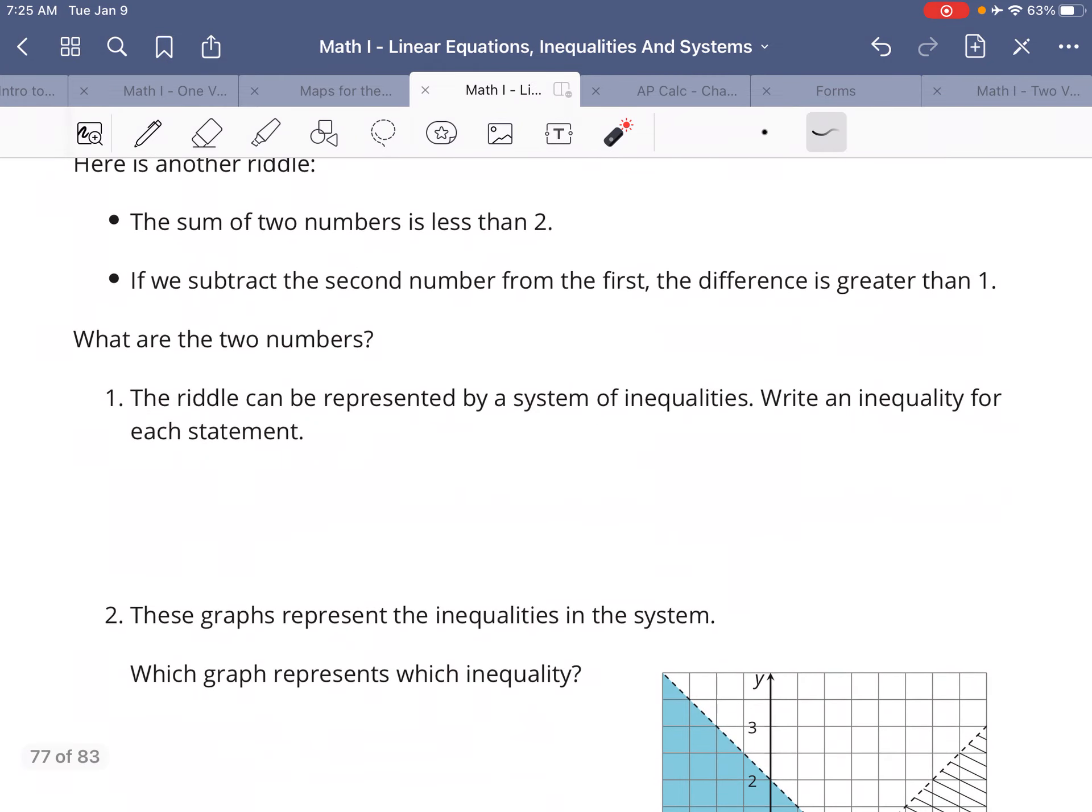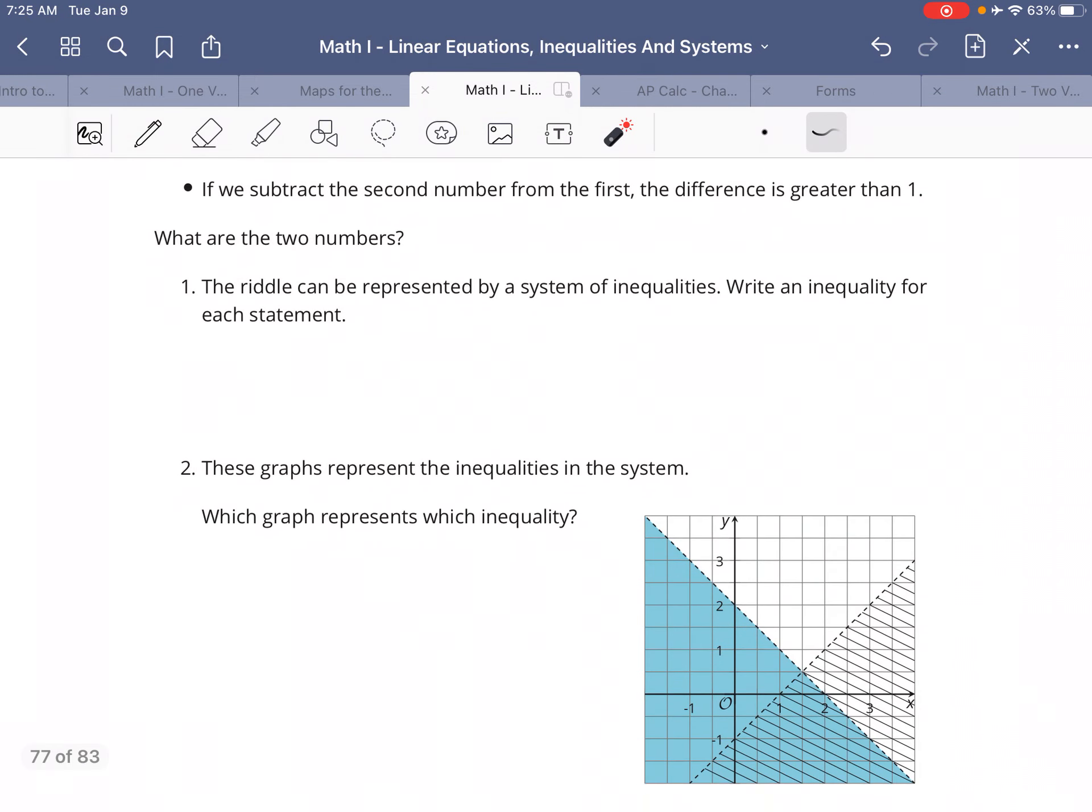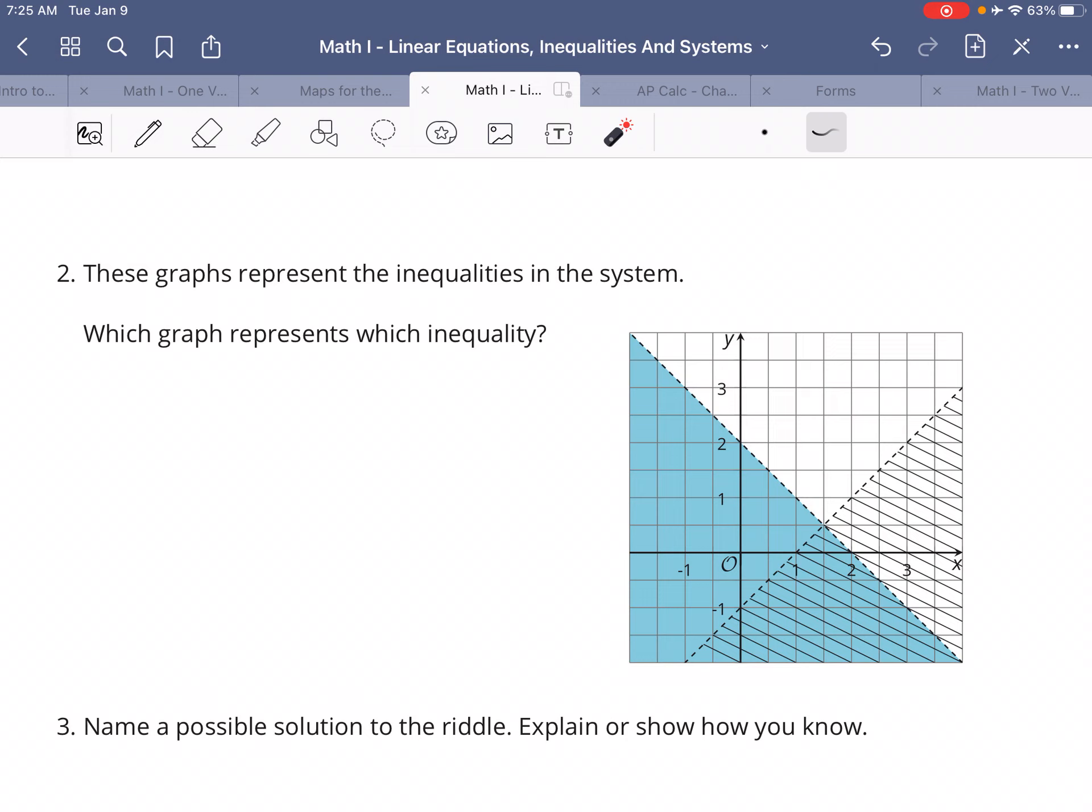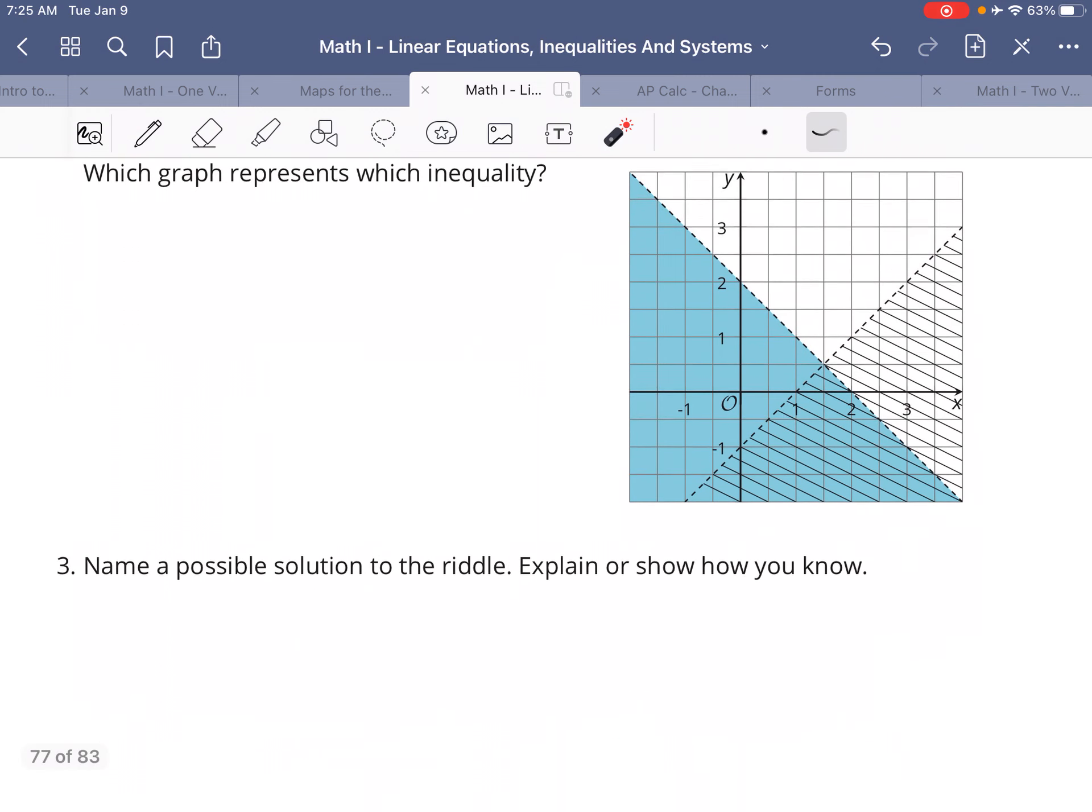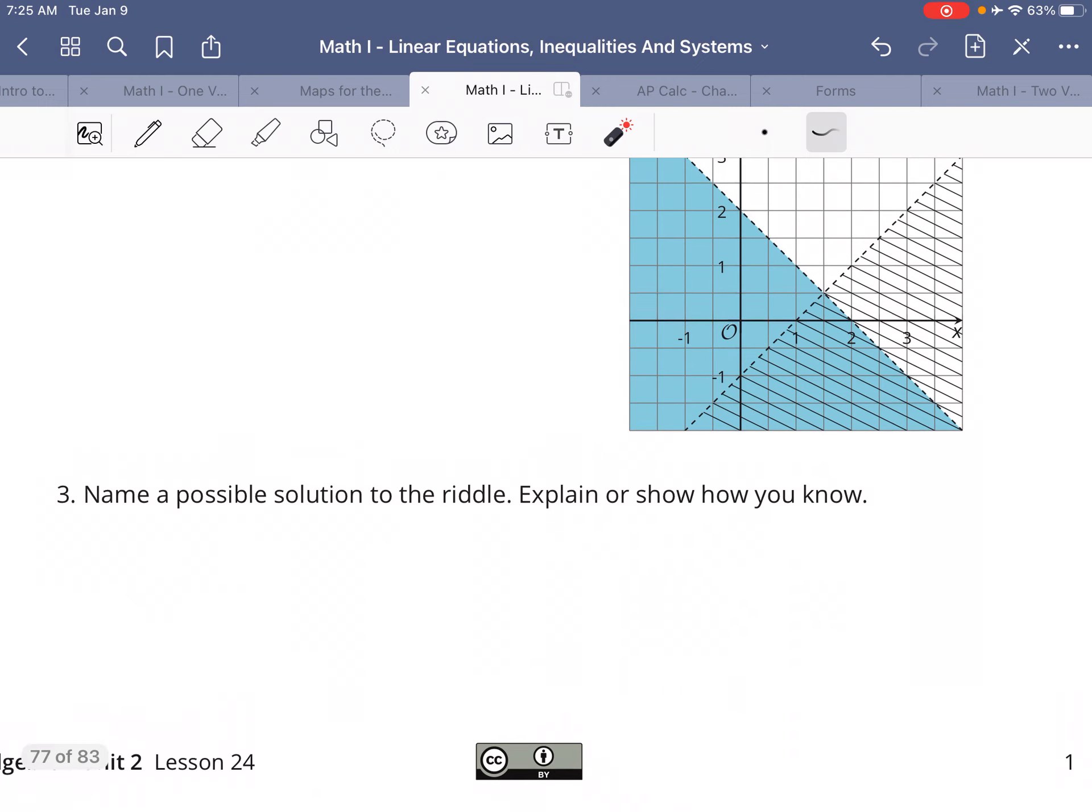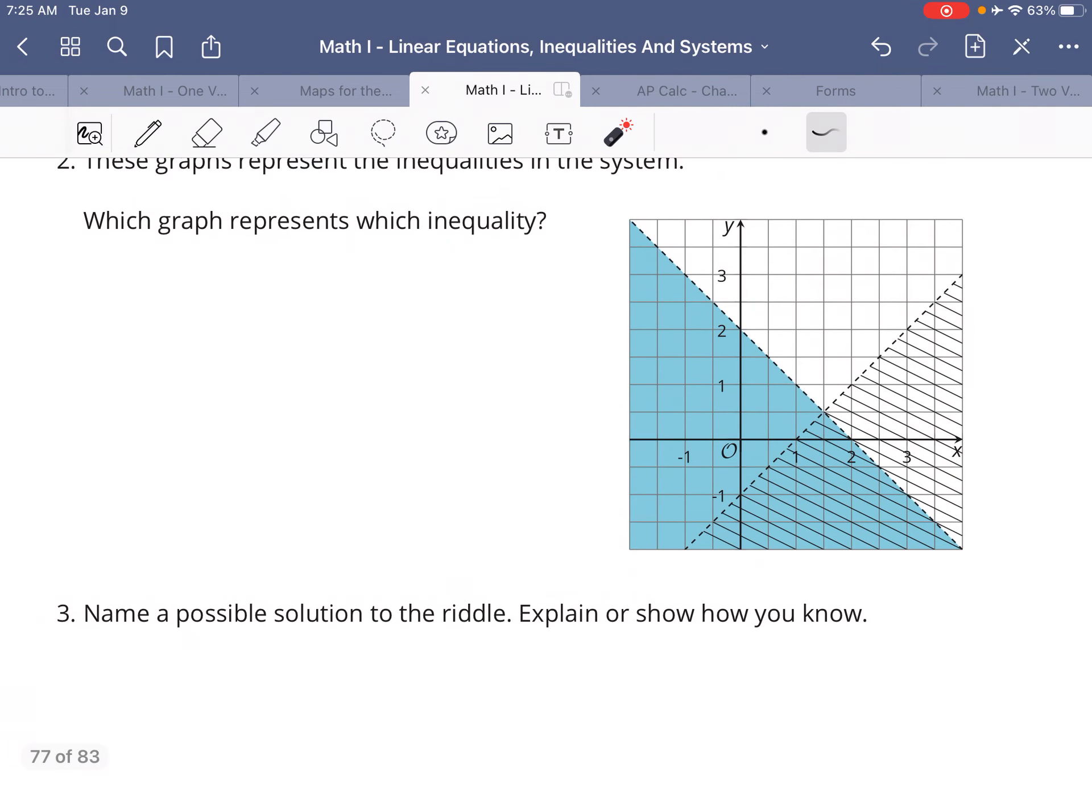So the riddle can be represented by a system of inequalities. Write an inequality for each statement. We just talked about that. These graphs represent the inequalities in the system. Which graph represents which inequality? Well, type them into Desmos and take a look. Then name a possible solution to the riddle—you're looking for an X and a Y coordinate that make both inequalities true at the same time.